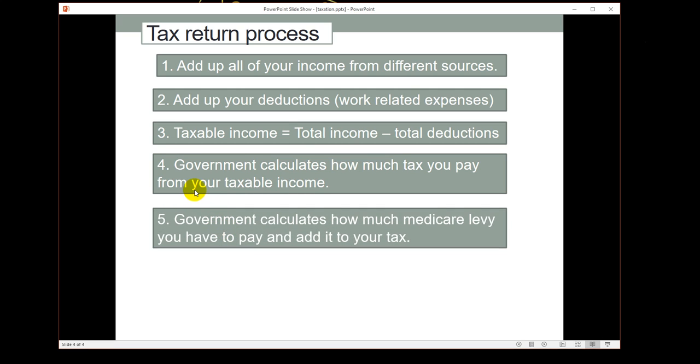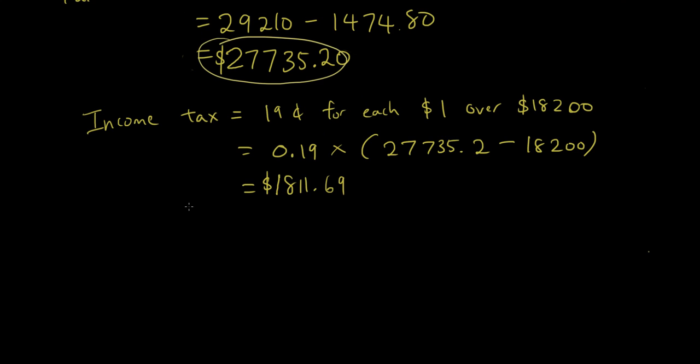So we've just calculated how much tax John has to pay and now we're going to calculate how much Medicare levy he has to pay. Medicare levy is basically a fee for getting medical care in Australia and it's 2% of your taxable income. So the Medicare levy equals 2% of taxable income.